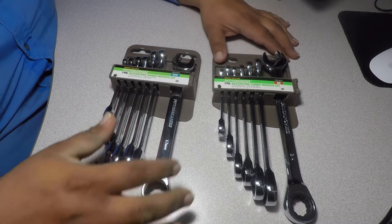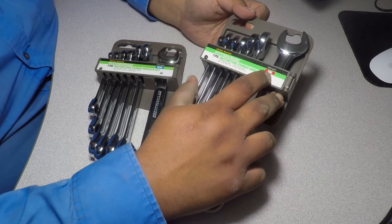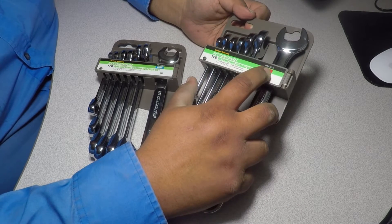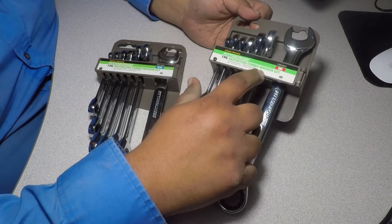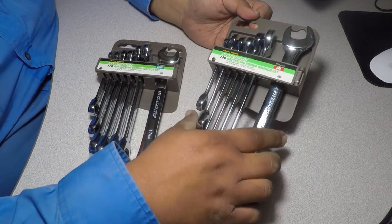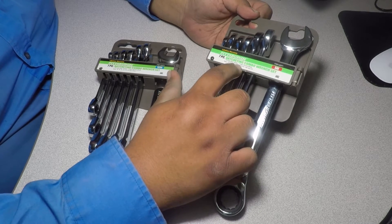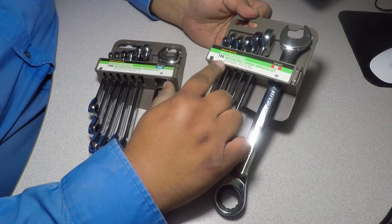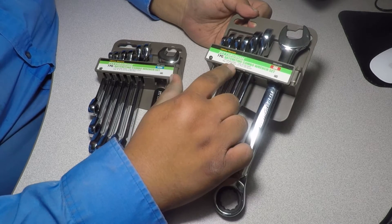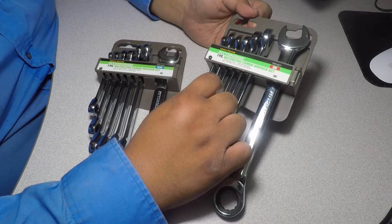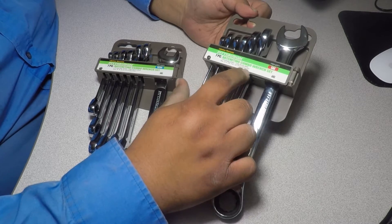And for the SAE we got item number 62571, so this is 572 and this is 571, 62571. We got 7 pieces, same 72 tooth system with triple chrome plated sizes 5/16, 3/8, 7/16, 1/2, 9/16, 5/8, and 3/4, the big one.